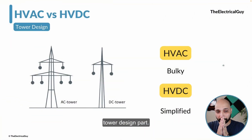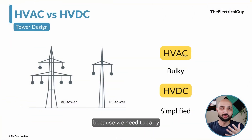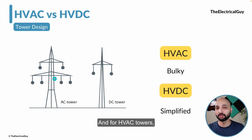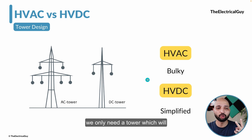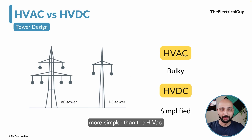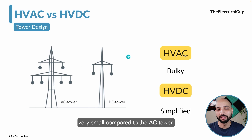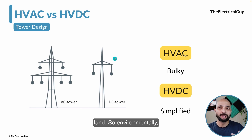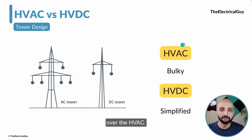Moving on to tower design. The HVAC tower is bulky because it needs to carry three conductors — as you can see on the left, a double circuit tower design requires a significant amount of steel. In contrast, the HVDC tower only needs to carry two conductors, making the design much simpler. The footprint — the land required — is also much smaller compared to the AC tower. This adds to the environmental advantage of HVDC: it uses less steel and less land.